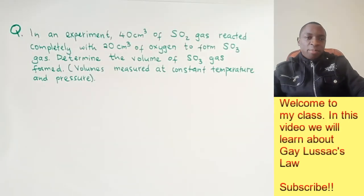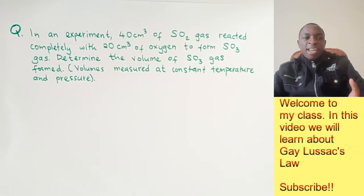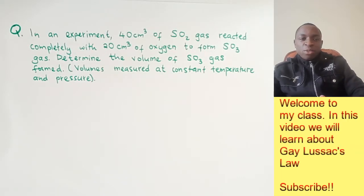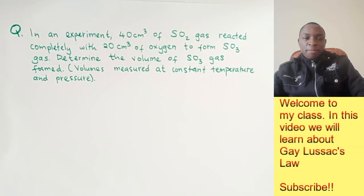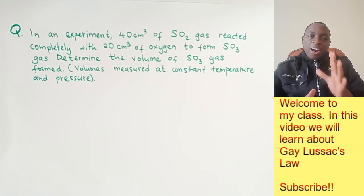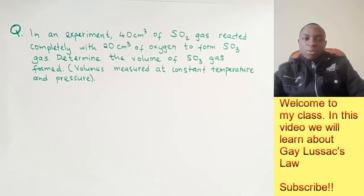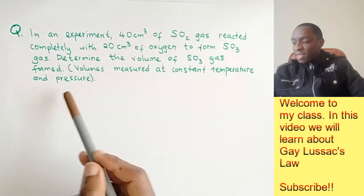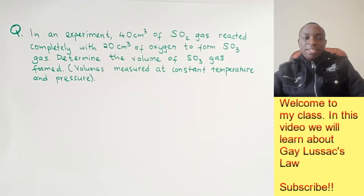This first example reads: in an experiment, 40 cubic centimeters of sulfur-4 oxide gas reacted completely with 20 cubic centimeters of oxygen to form sulfur-6 oxide gas. Determine the volume of sulfur-6 oxide formed. According to Gay-Lussac's law, these volumes must be measured at the same temperature and pressure, which is why the values in brackets indicate constant temperature and pressure.